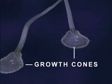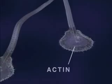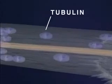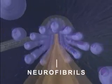Two principal proteins involved in growth cone function are actin, which is responsible for the pulsating motion seen here, and tubulin, a major structural component of the neurite membrane. During normal cell growth, tubulin molecules link together end-to-end to form microtubules, which surround neurofibrils, another structural protein component of the neuronal axon.